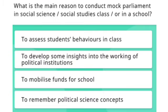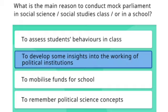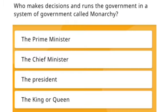The next question: what is the main reason to conduct a mock parliament in social science or social studies classes in a school? Option 1: To assist students' behavior in class. Option 2: To develop some insight into the working of political institutions. Option 3: To mobilize funds for school. Option 4: To remember political science concepts. The right answer is Option 2 — to develop some insight into the working of political institutions.